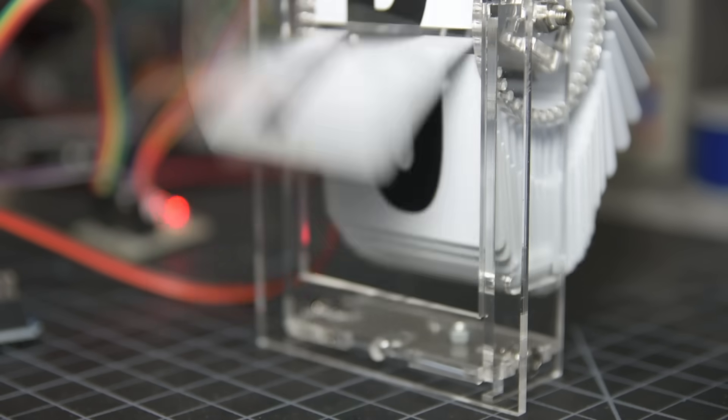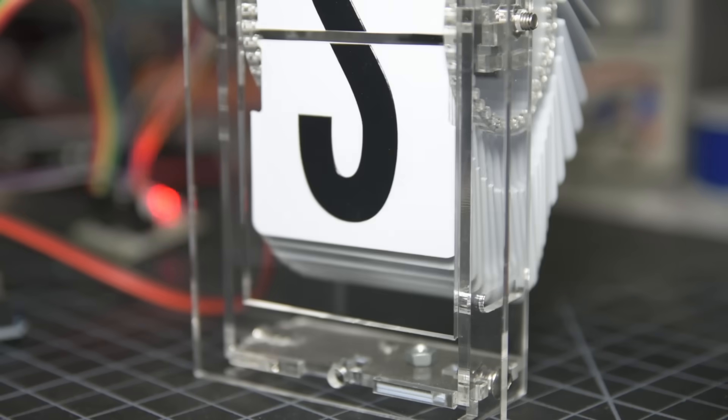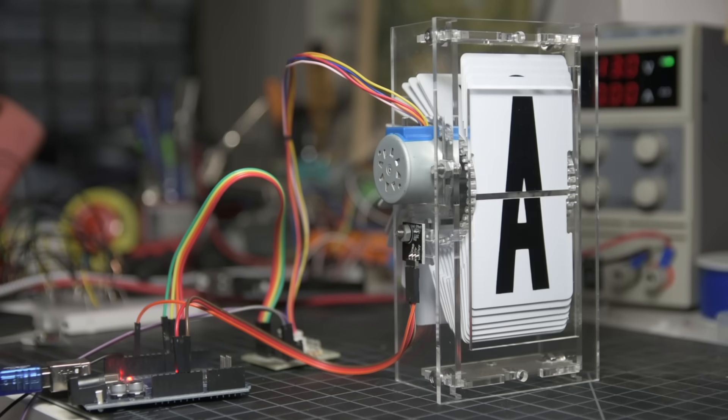It also just doesn't look as good from the front. So that covers the basic mechanics. But how does the Arduino control whether to show an A or a Z?